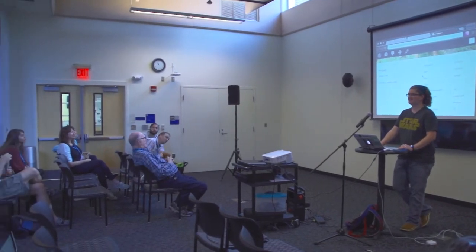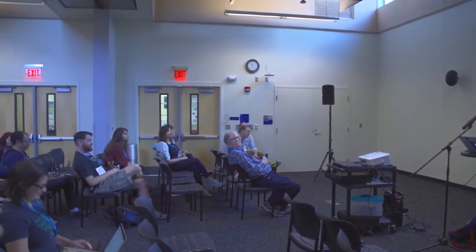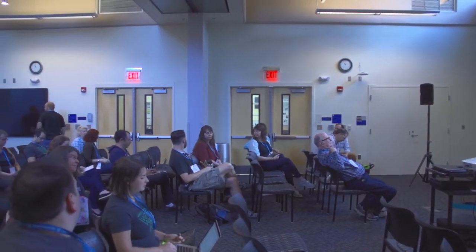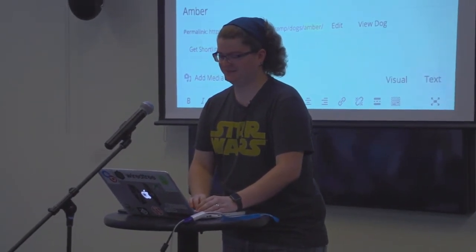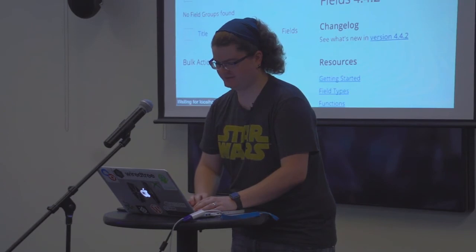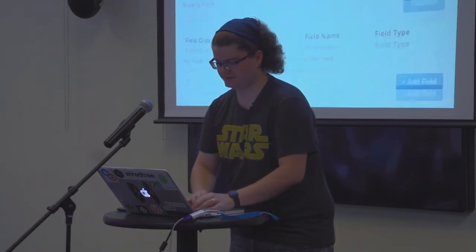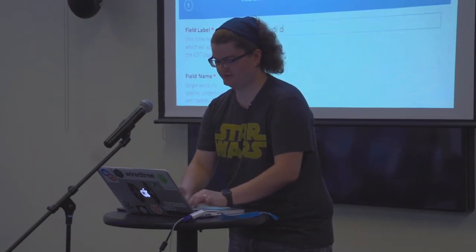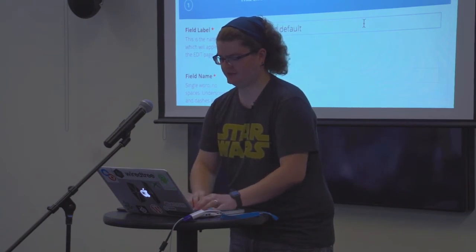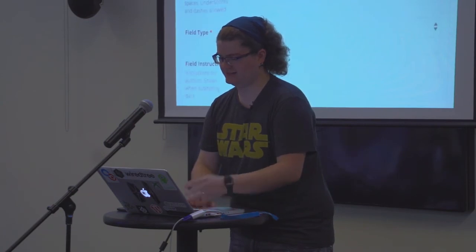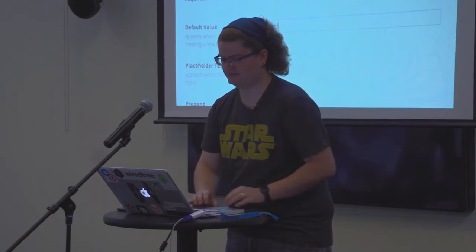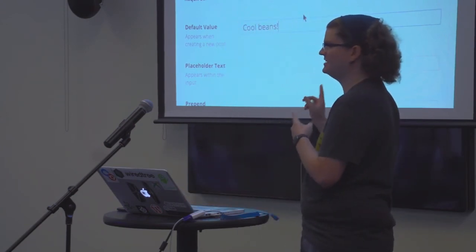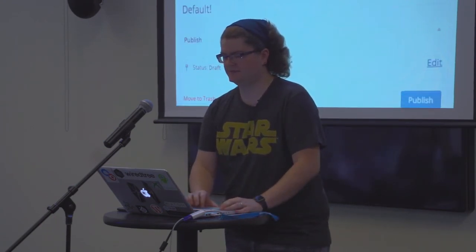Any other questions? Someone asks: why would you write this by hand? Exactly — that's why I didn't bother showing you how to write it by hand. Let's head back to ACF and make a whole new set. We'll call it 'default' and create a new field called 'this should default'. We'll make it a basic text field, and for default value we'll put 'cool beans' — so every time you load a page that requires this field and it doesn't have a value, it should default to 'cool beans.'